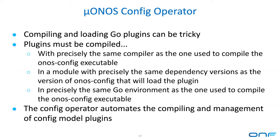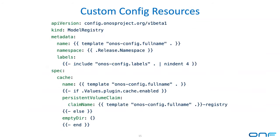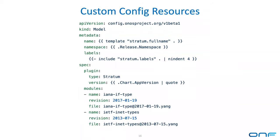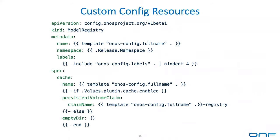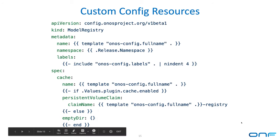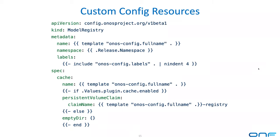When the system is upgraded, the config models will just work. The config operator adds two custom resources to Kubernetes: a model registry — basically a defined place to store plugins, allowing you to provide an arbitrary volume — and this is the actual template we use in the ONOS config chart currently to store plugins.